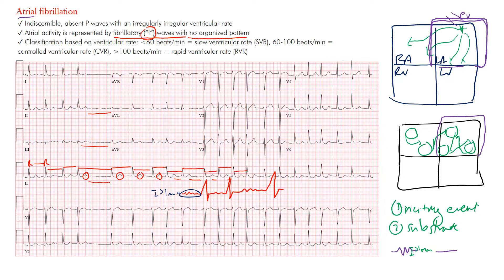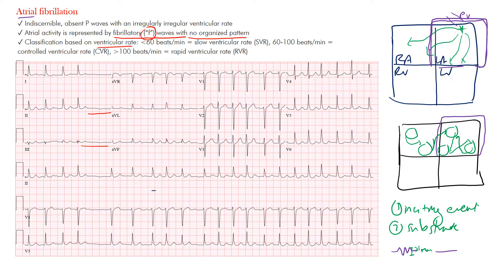Aside from identifying atrial fibrillation, you also want to classify it by ventricular rate. This helps us say whether the patient is in atrial fibrillation with rapid ventricular response — AFib with RVR. If it's less than 60 beats per minute, that's atrial fibrillation with a slow ventricular rate. Between 60 and 100 is a controlled ventricular rate. More than 100 beats per minute is atrial fibrillation with a rapid ventricular rate — RVR.